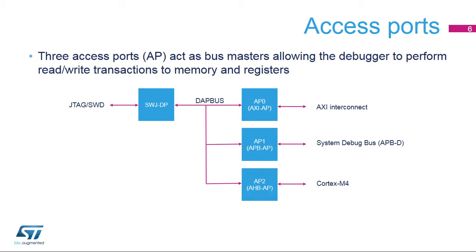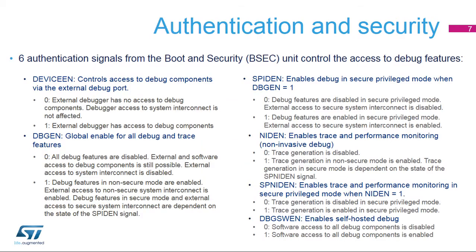Applications running on either processor can access the debug features located on the system debug bus, since they are mapped in the unified address space. This includes the trace subsystem — STM, TPIU, TSGEN, and ETF — as well as the Cortex-A7 features: ETM, CTI, and DBG. However, only the Cortex-M4 can access features on its private bus. The authentication signal states are set in the boot and security (BSEC) unit. The default state of these signals is determined by the factory state of the device, open or closed, and can be modified by secure software. The debugger must use secure privileged transactions to access secure addresses.